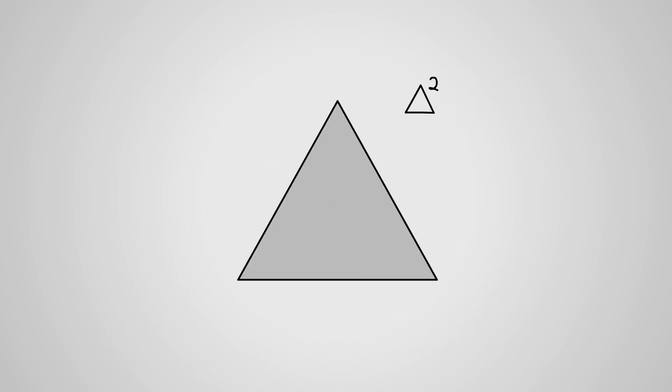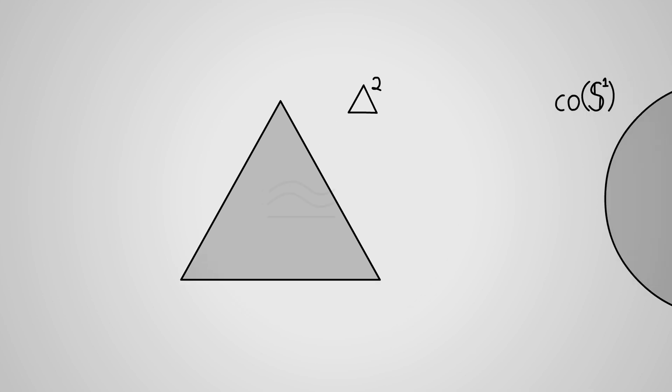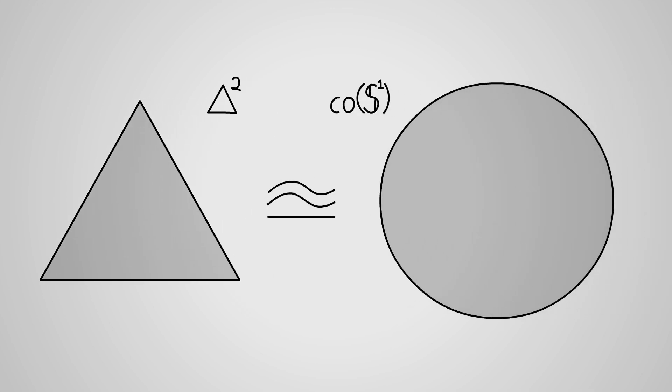Now, an n-simplex is actually homeomorphic to the space that you get when you take a sphere whose surface has dimension n-1 and fill it in. Take its convex hull, which is called a closed n-ball.